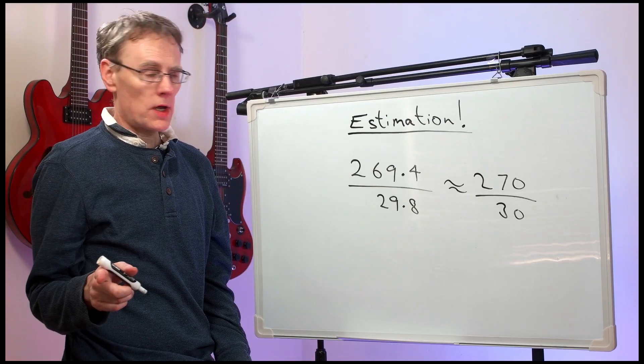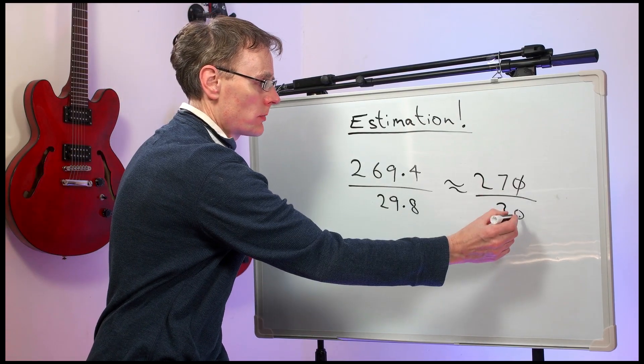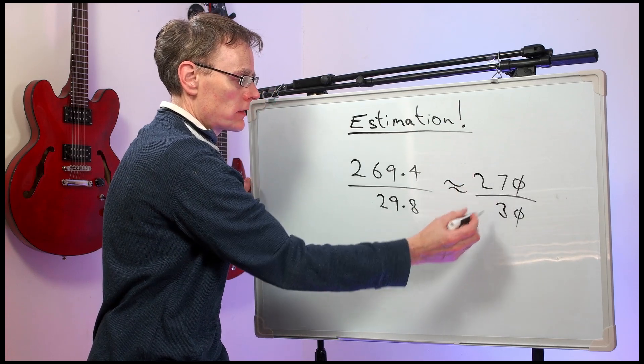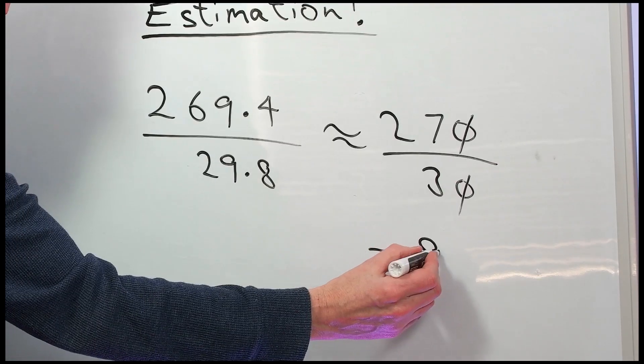Now that cancels down nicely. Divide the top and bottom by 10. 27 divided by 3 would be 9.